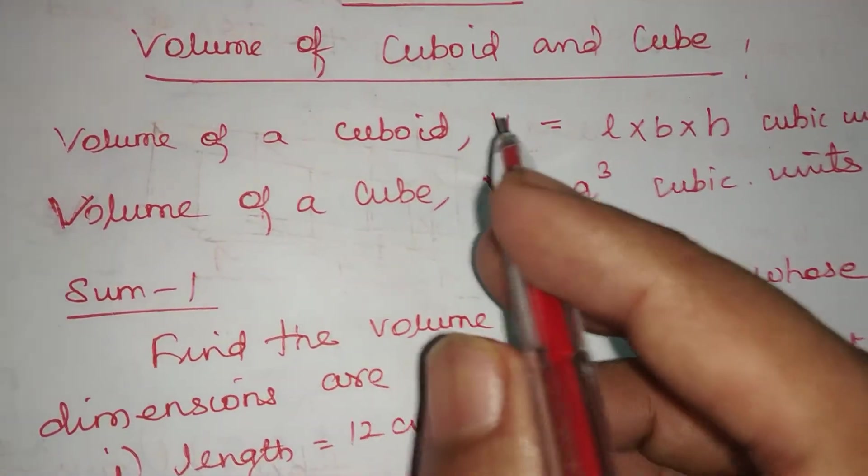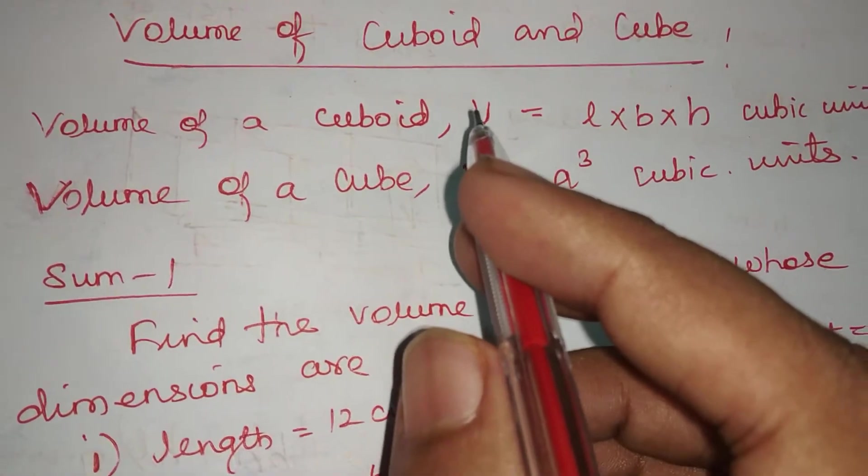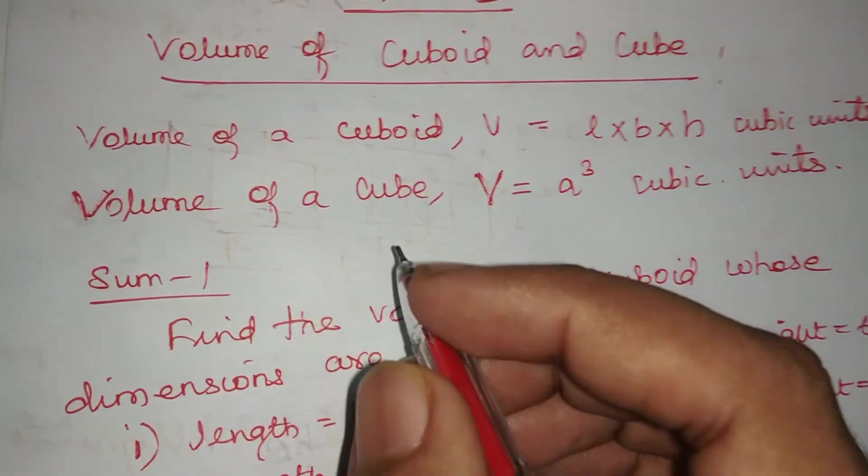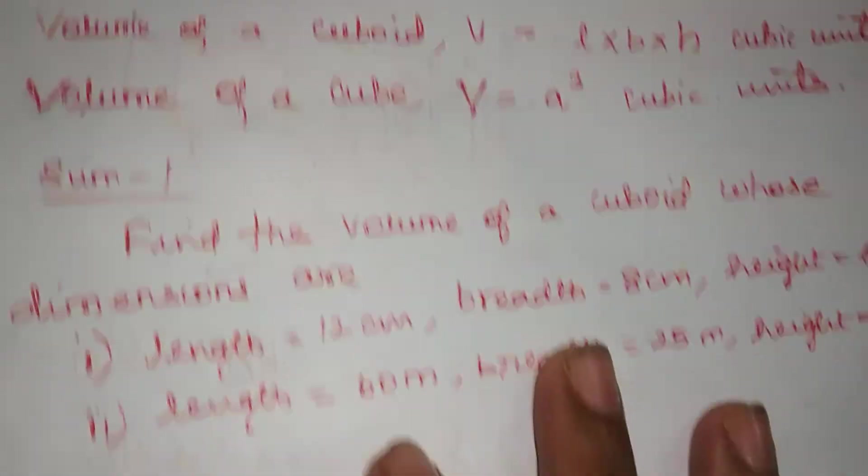Volume of a cuboid formula is L into B into H, which is length into breadth into height in cubic units. Volume of a cube formula is A cubed cubic units.